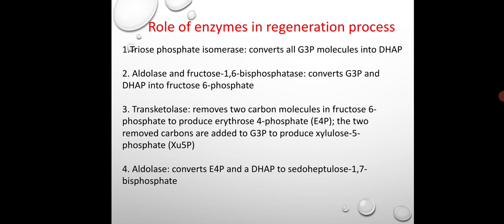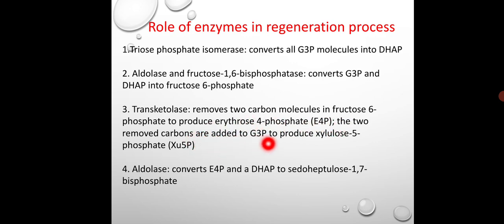Transketolase — if you remember, transketolase and aldolase are also involved in the pentose phosphate pathway, where sedoheptulose and xylulose sugars are intermediates. Transketolase removes two carbon molecules from fructose 6-phosphate to produce erythrose 4-phosphate. The two removed carbons are then added to G3P to produce xylulose 5-phosphate. So the conversion sequence is: G3P → DHAP → fructose 6-phosphate → erythrose 4-phosphate → xylulose 5-phosphate.